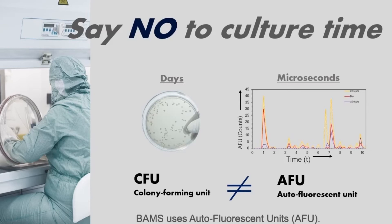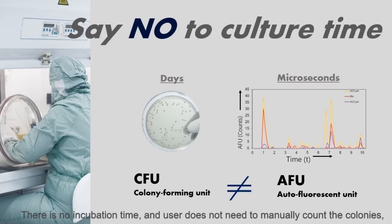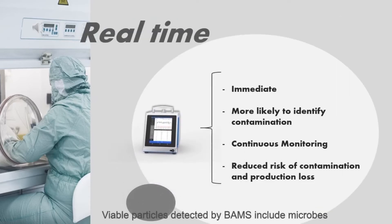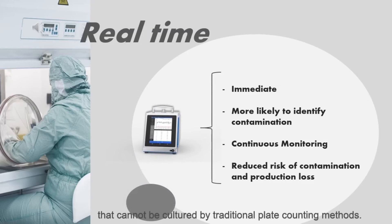BAMS uses autofluorescent units, or AFU. This unit reflects particle size and fluorescence. There is no incubation time and it does not require manually counting colonies. AFU counts are displayed on screen in real time. Viable particles detected by BAMS include microbes that can be cultured by plate-counting methods and also viable but non-culturable particles that cannot be cultured by traditional plate-counting methods.